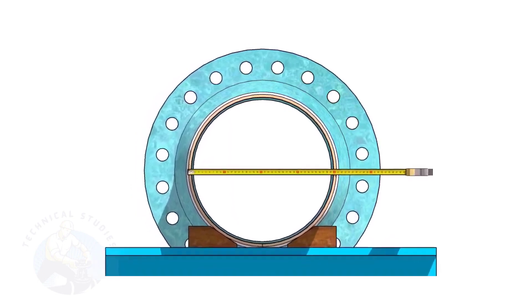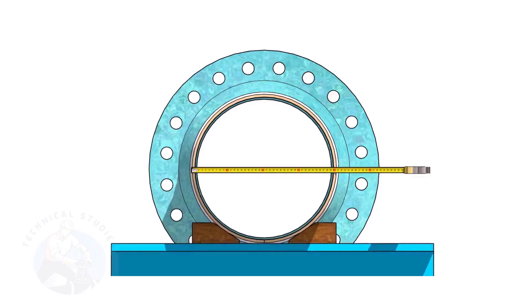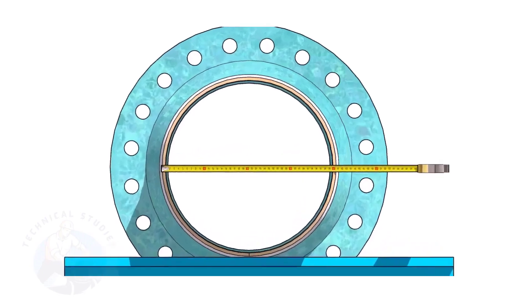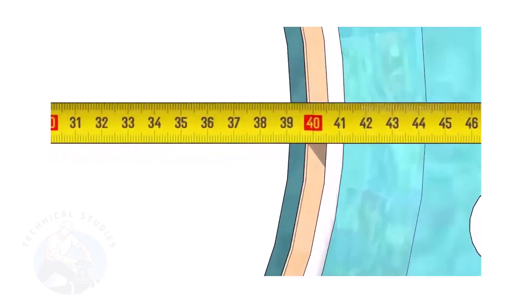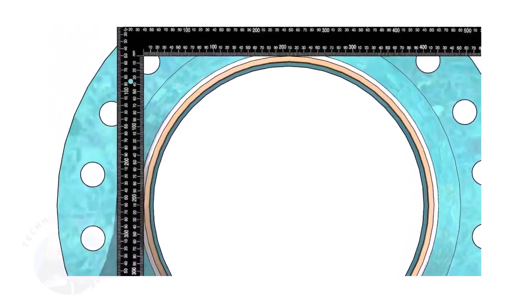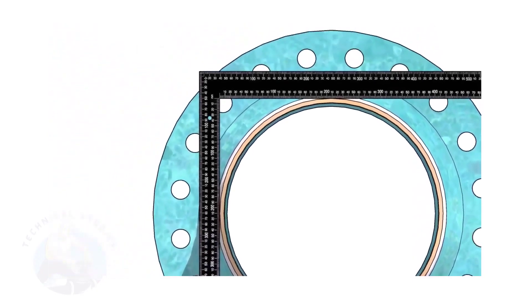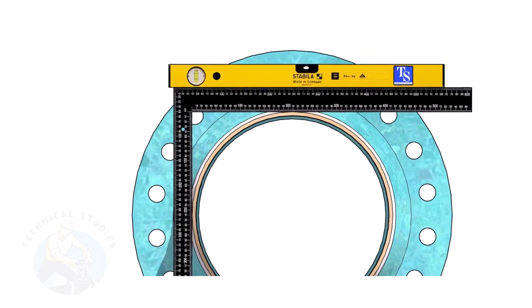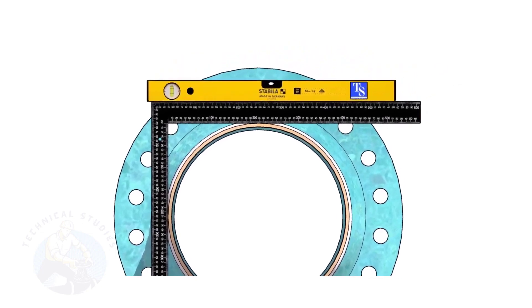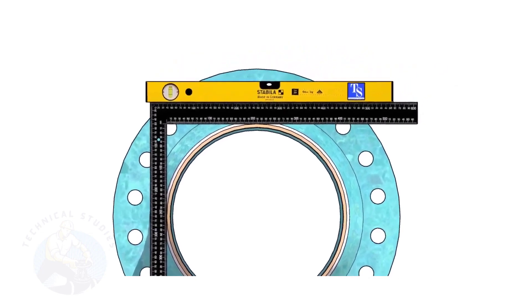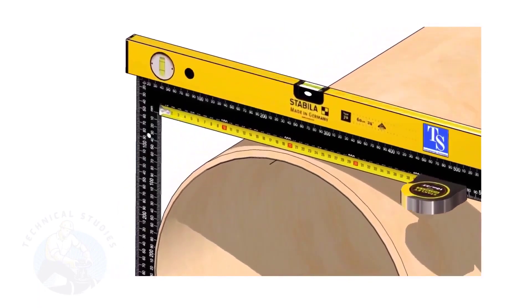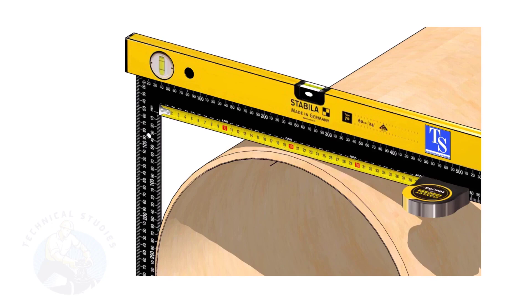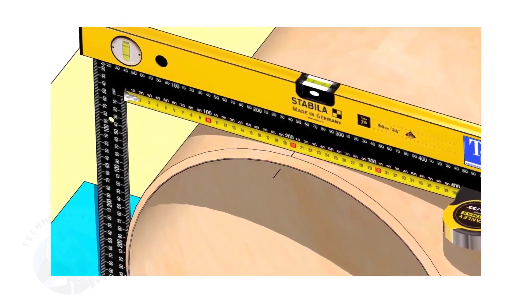Check the outer diameter of the pipe. Here, the diameter of the pipe is 406 millimeters. Hold a large right angle on the pipe as shown. Put a spirit level on the right angle and correct the top level. Mark half OD of the pipe on the top side. Here, the half OD is 203 millimeters.